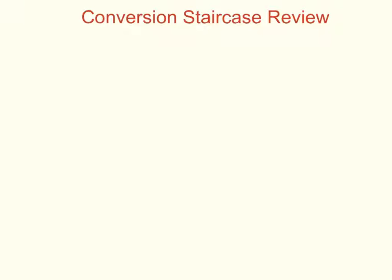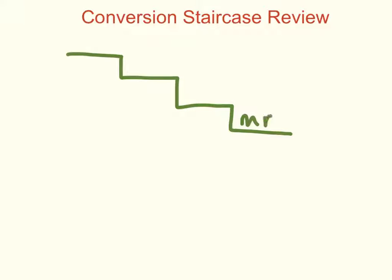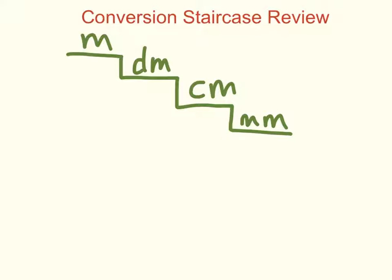In this video, we are going to review the conversion staircase. There are four steps to the conversion staircase. On the bottom step is millimeters — that's the smallest unit we use. The next step has centimeters, and then there's decimeters and meters. We don't worry too much about decimeters in Grade 5, but it's there because it needs to have a stair to itself.